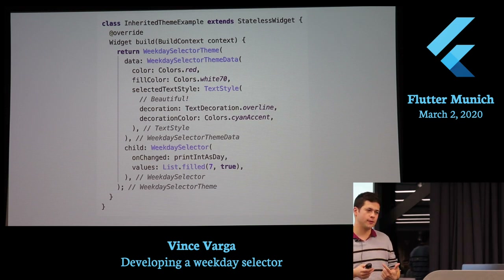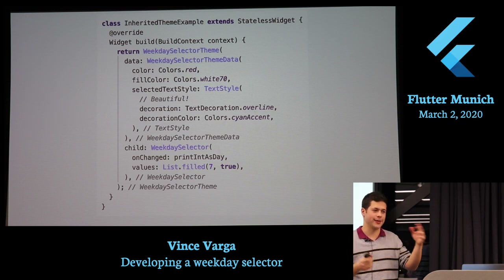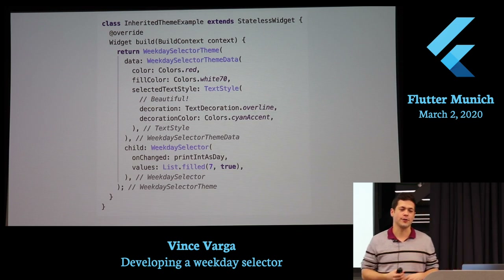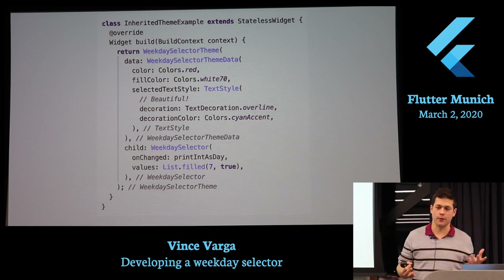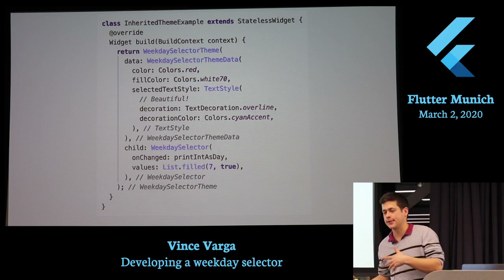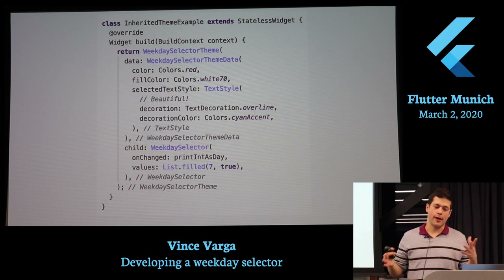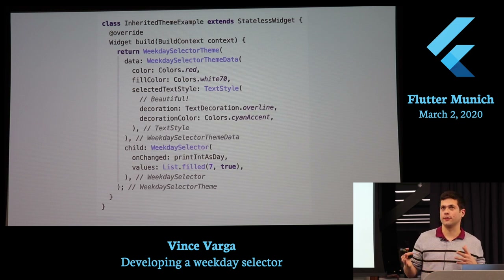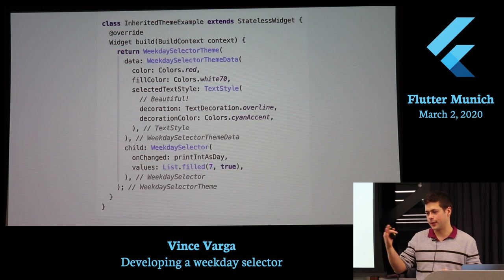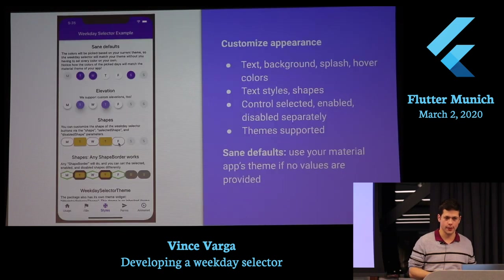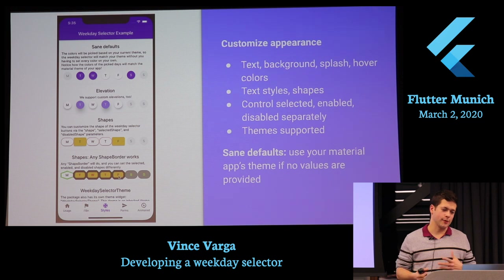I also made it themeable — there's an inherited theme called WeekdaySelectorTheme. All child widgets will use this theme. So if you have the weekday selector in multiple parts of your application, you can specify once how you want it to look. Then wherever you place the WeekdaySelector, you only have to specify the onChanged listener and the values.